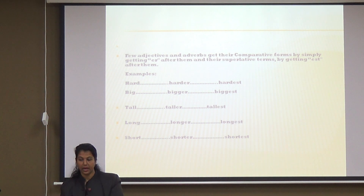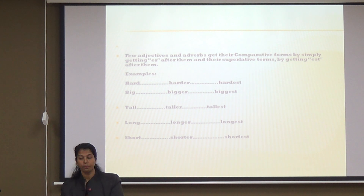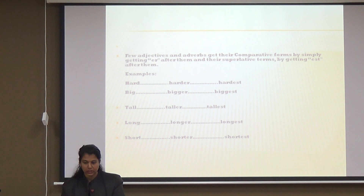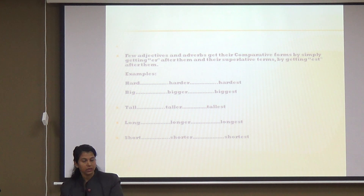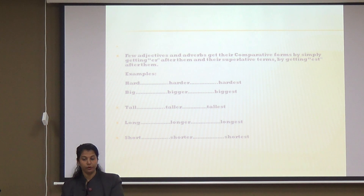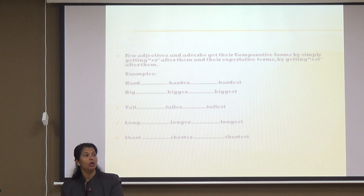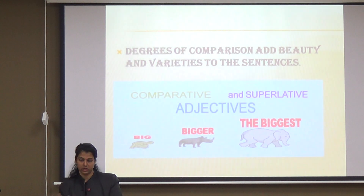Also, few adjectives and adverbs get their comparative form by simply adding '-er' after them and their superlative forms by adding '-est'. Here are some examples: hard — positive degree; add '-er' — harder, that is comparative degree; add '-est' — hardest, that is superlative degree. A few other examples are: big, bigger, biggest; tall, taller, tallest; long, longer, longest; short, shorter, shortest.